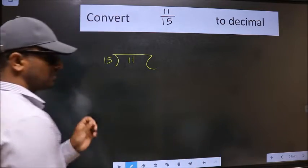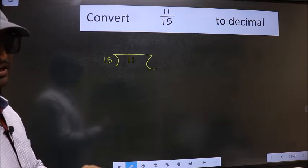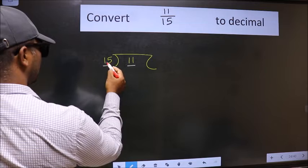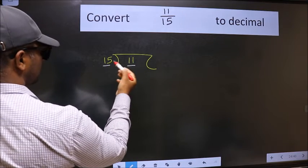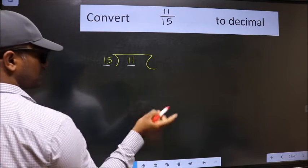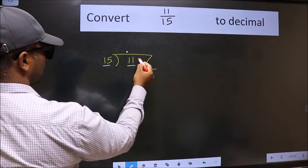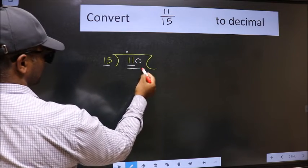This is your step 1. Next, here we have 11 and here 15. 11 is smaller than 15, so what we should do is put a dot and take 0. So 110.